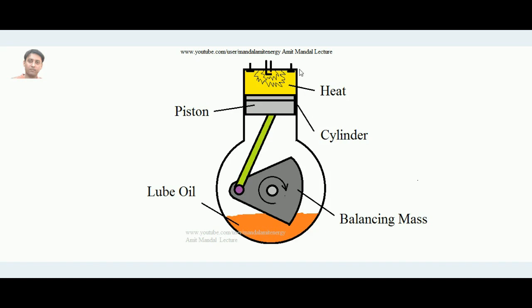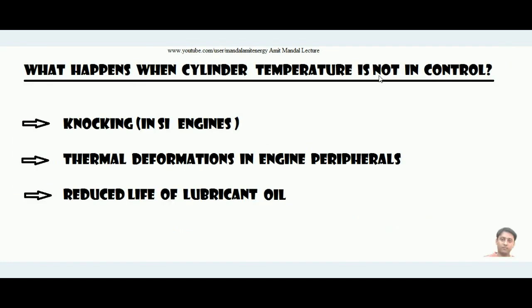Only 25 percent of heat is converted into work; 75 percent is waste. About 35 percent is carried away by exhaust, and still more heat must be dispensed so the engine temperature stays under control. In SI engines, uncontrolled high temperature can lead to knocking — which reduces engine life and performance. In CI engines, however, high temperature does not cause knocking.